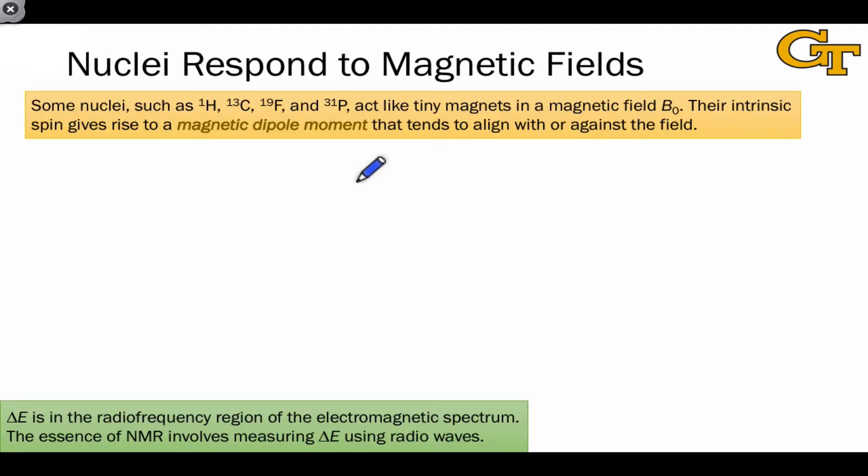Luckily for organic chemists, many of the nuclei that do respond to magnetic fields, in other words have meaningful spins, are nuclei of interest to organic chemists, such as the proton itself, a hydrogen-1 nucleus, carbon-13, which is not very abundant but very important from an NMR perspective, and even isotopes like fluorine-19 and phosphorus-31.